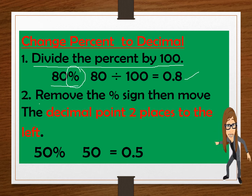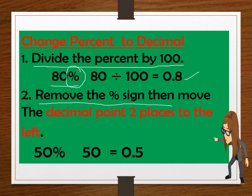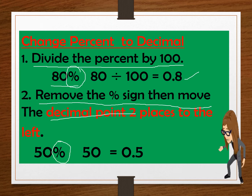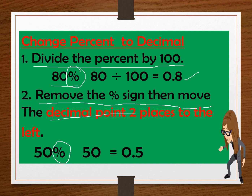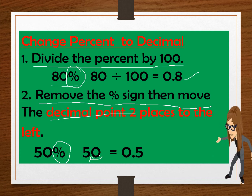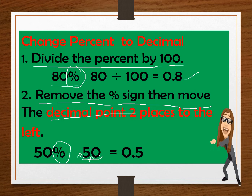Another method: remove the percent sign, then move the decimal point two places to the left. So we need to remove this percent sign, and then from here we need to move the decimal point two places to the left — one, then two. So the answer is 0.5 or 5 tenths.